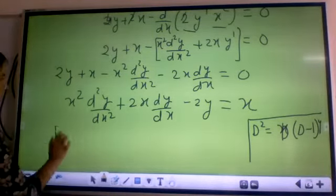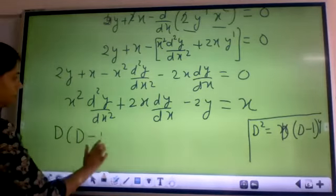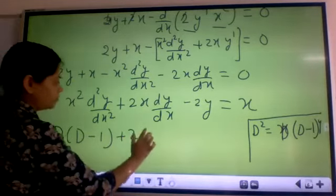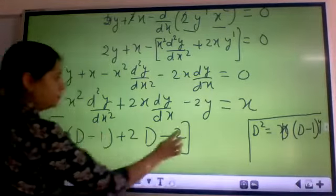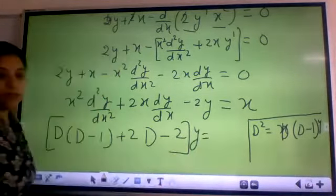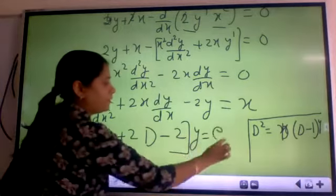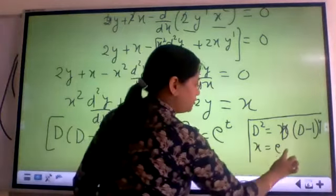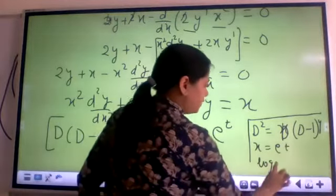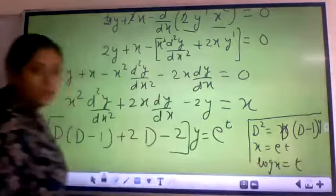So now this will get converted into d(d minus 1) plus 2d minus 2y is equal to e^t. Because we have taken the substitution x is equal to e^t, log x is equal to t.